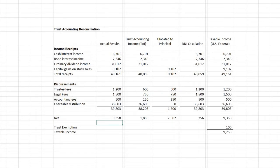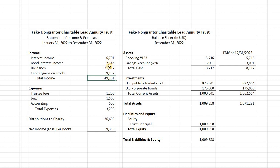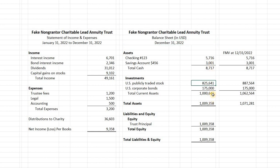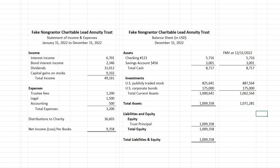Looking at the financial statements: we have interest income, dividend income, capital gains on stock sales, expenses, and the distribution out to the charity. The balance sheet at end of year shows cash accounts at cost, cost basis of publicly traded stocks and bonds, and net assets or net principal within the trust. There's also a fair market value column — while not required for lead trusts (it is required for charitable remainder trusts), we entered it anyway for completeness. We do have to disclose the ending FMV of assets on page one of the 5227.